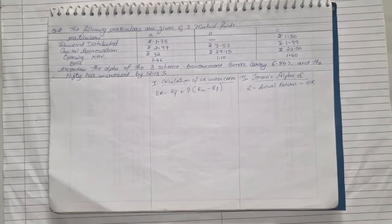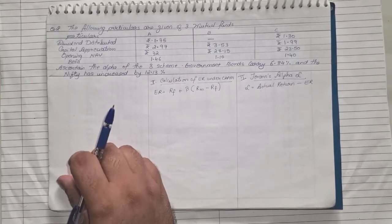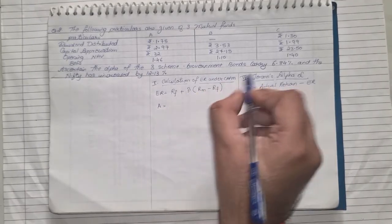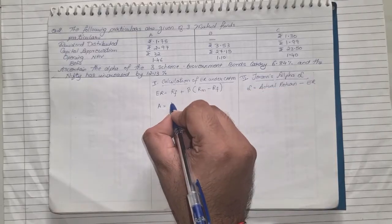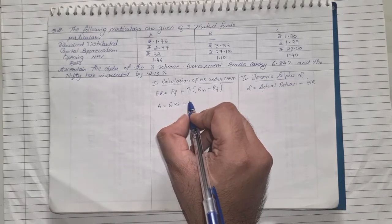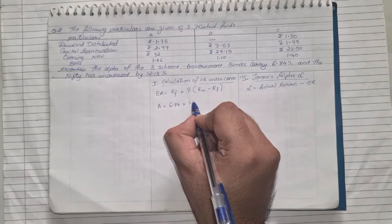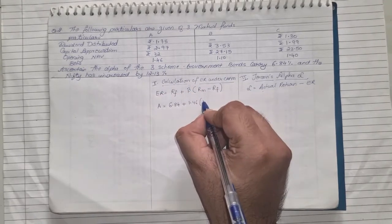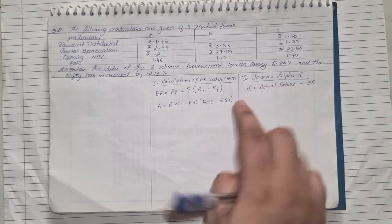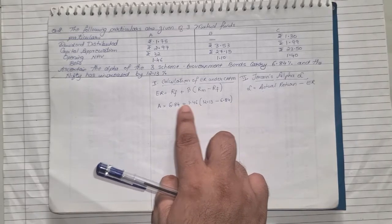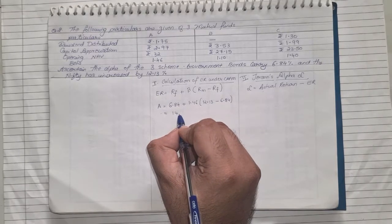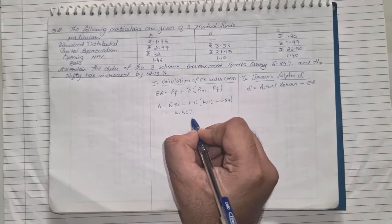So if we start with scheme A, expected return for A equals risk-free return given in the question, the government bond that is 6.84, plus beta. Now beta for A is 1.46 into market return, that is your Nifty, 12.13, minus the risk-free return that is 6.84. So now we will first subtract, multiply, and then add it to 6.84, so the answer will come approximately 14.56 percent.